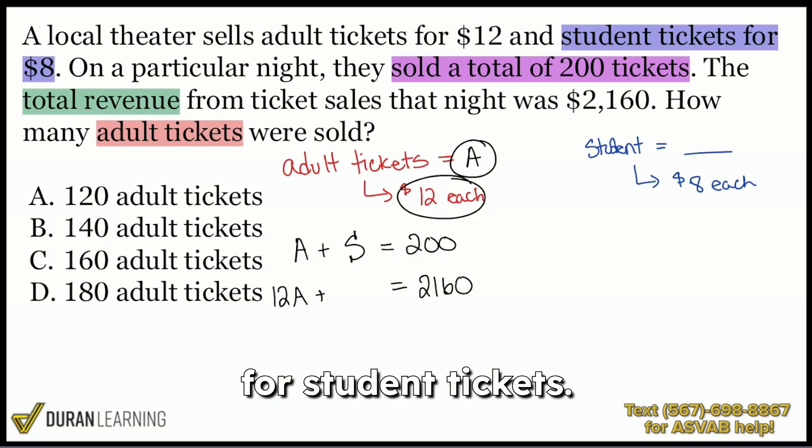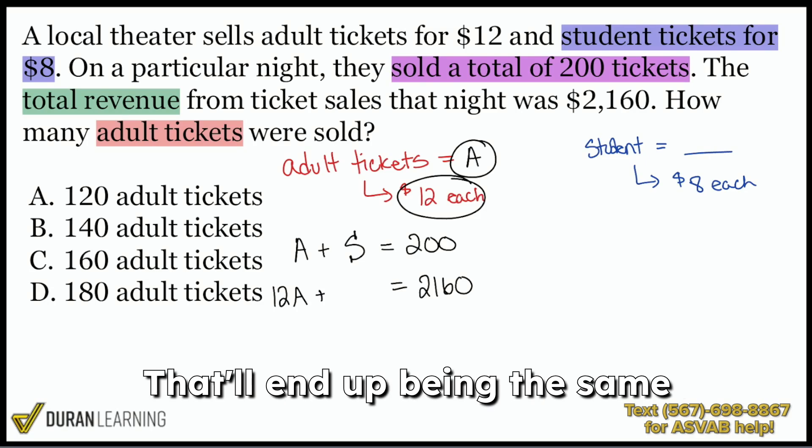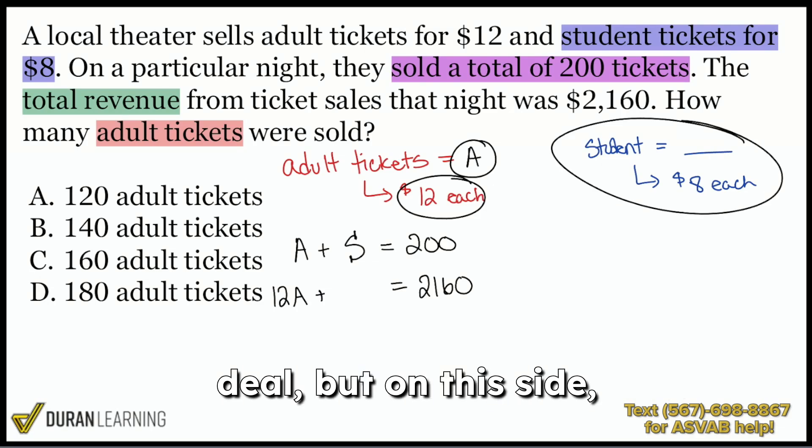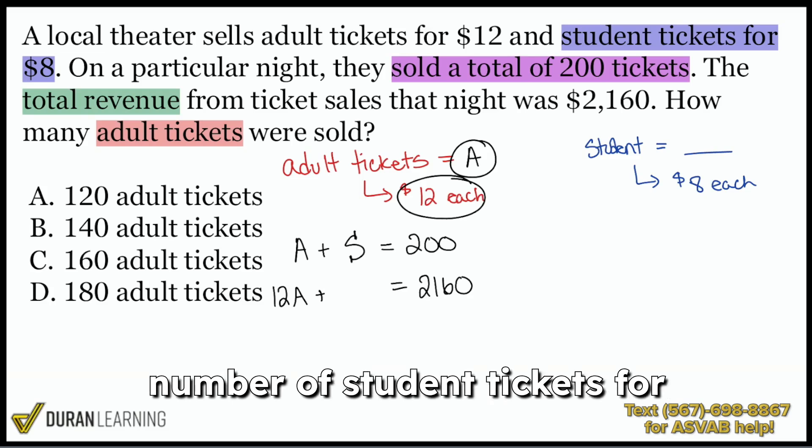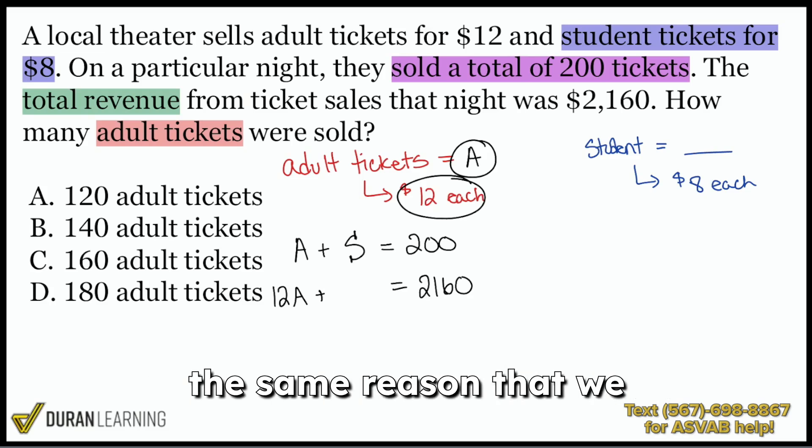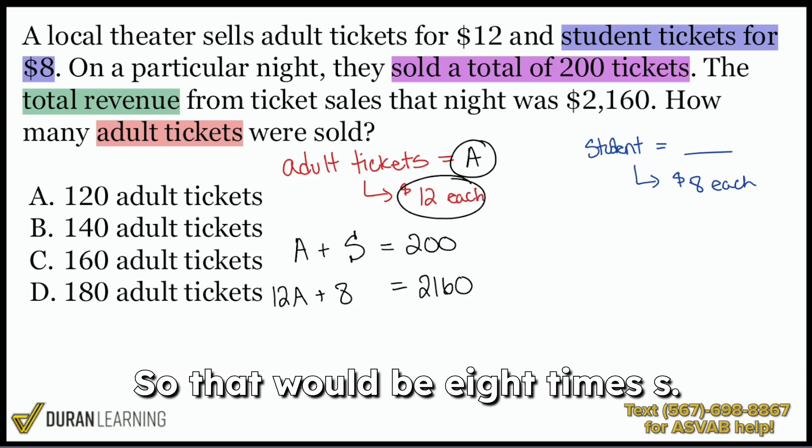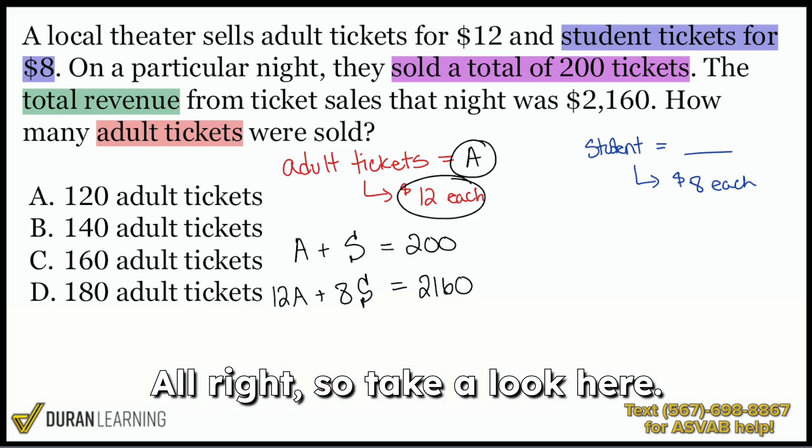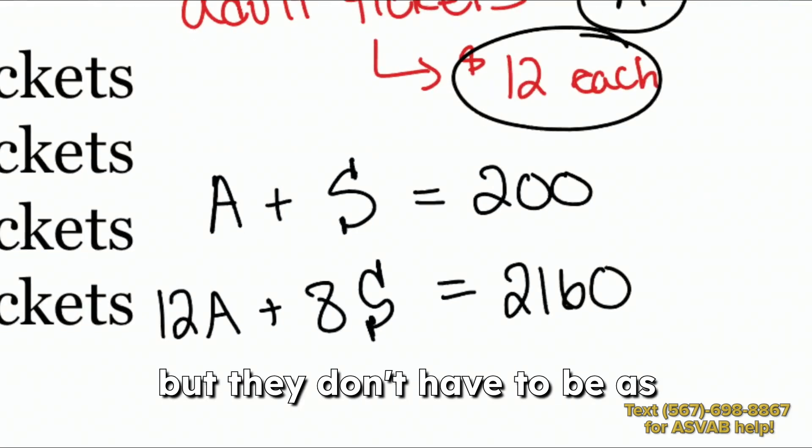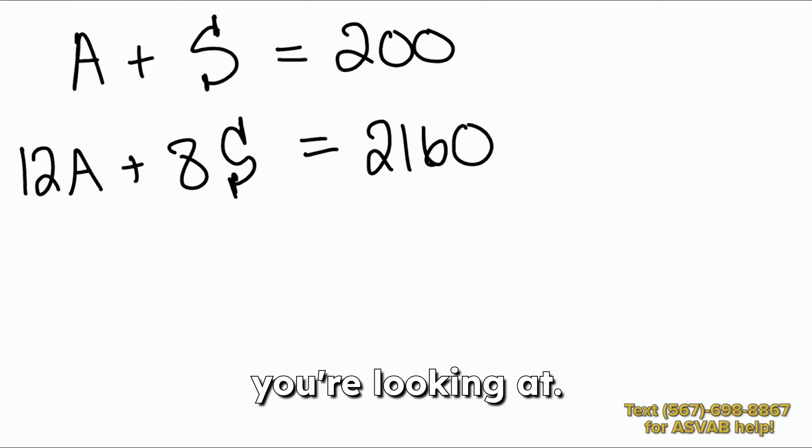To get the revenue for student tickets, that'll end up being the same deal, but on this side. That'll be $8 multiplied by the number of student tickets for the same reason that we described for adult tickets. So that would be eight times S. All right, so take a look here. This is where things get a little complicated, but they don't have to be as long as you understand what you're looking at.